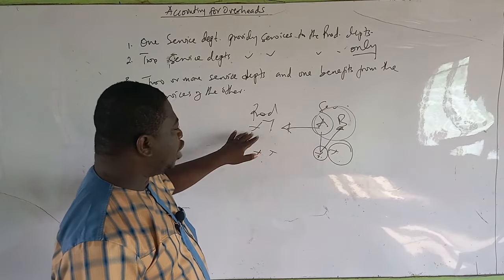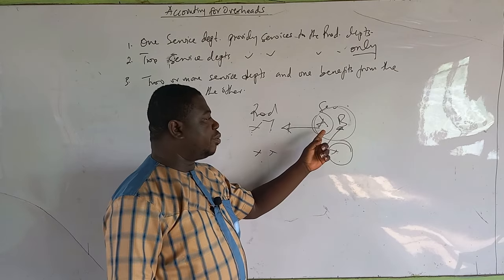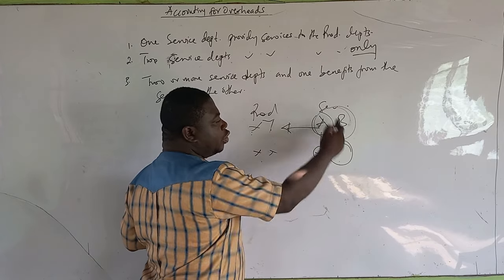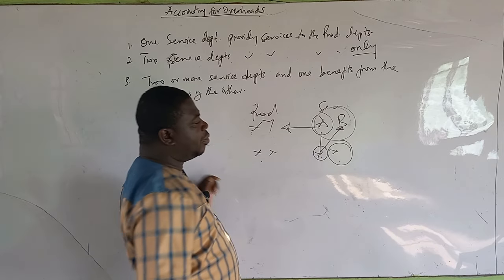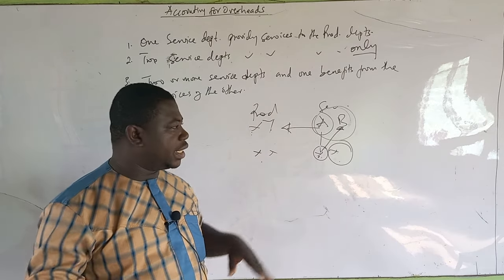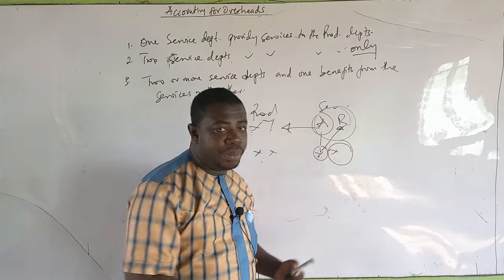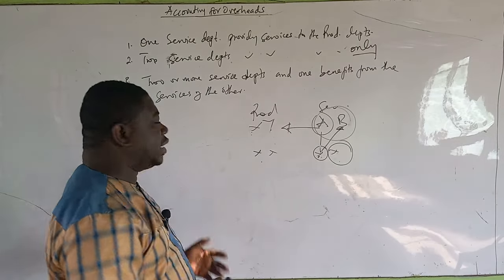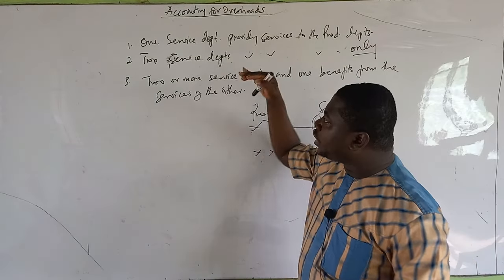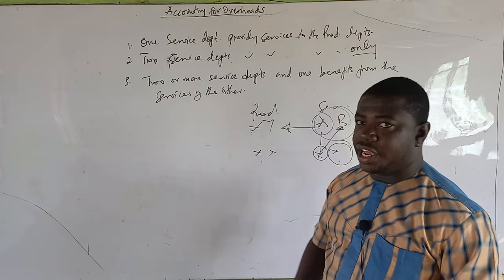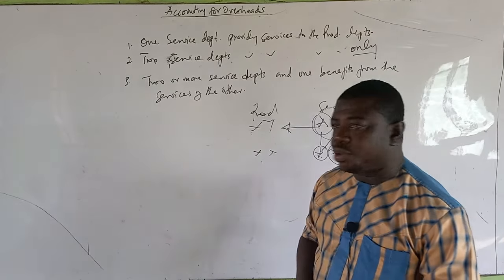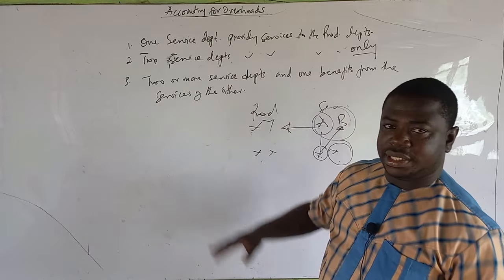So B is providing services for X, Y, and A. A is providing services to only X and Y. What is going to happen is that after we have shared the total overhead of B among the three of them, we can then share that of A to X and Y. I know this is very abstract, so if you are not understanding me very well, don't worry. I'm going to take practical questions for each of the scenarios and solve them. I want to take my time and let you understand these things very well.